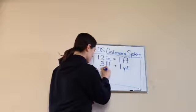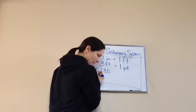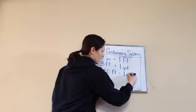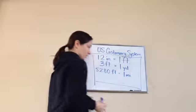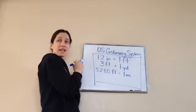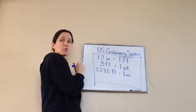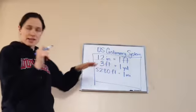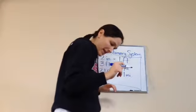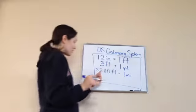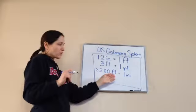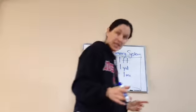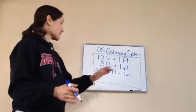5,280 feet equals one mile. That would be like taking 12 inches — a foot — and going back to back, and having 5,280 of these steps back to back to equal one mile.